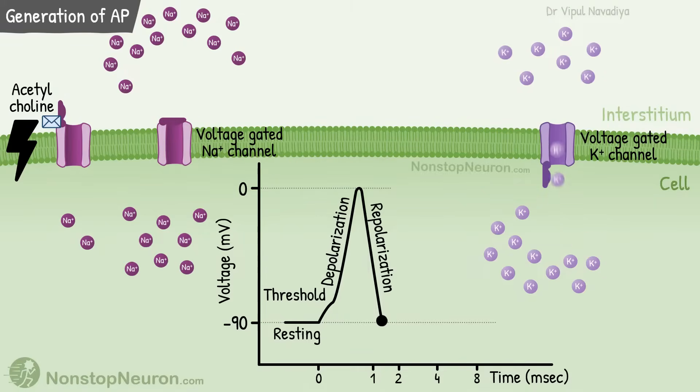Now potassium outflow continues for some time even after this. So we get after hyperpolarization. Eventually potassium channels also close and voltage returns to the resting membrane potential.